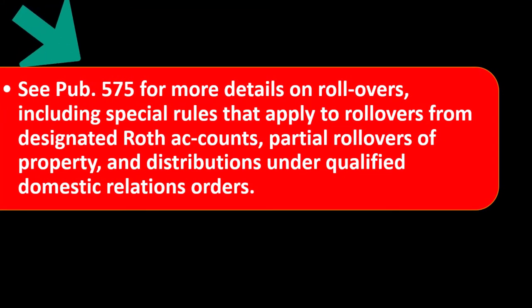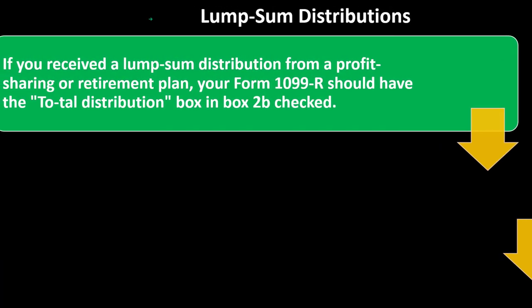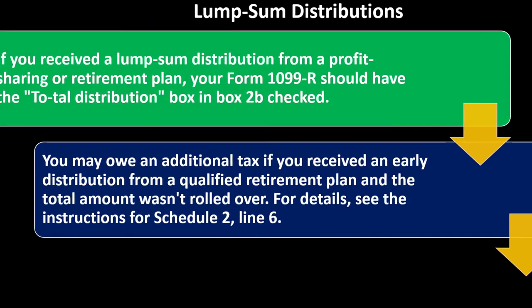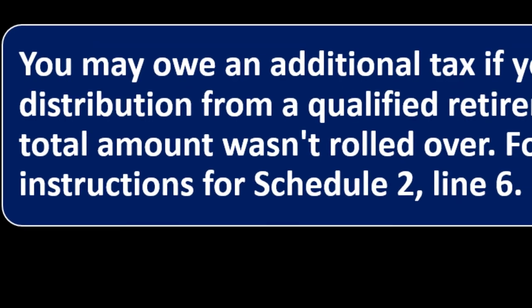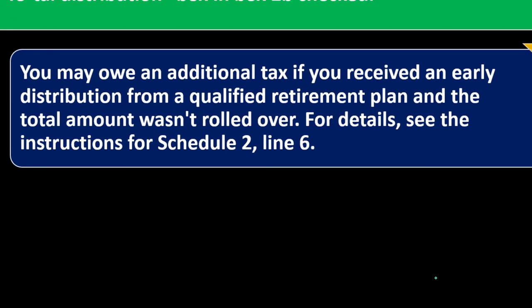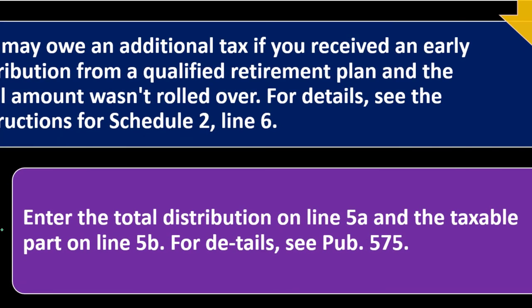See Publication 575 for more details on rollovers, including special rules for rollovers from designated Roth accounts, partial rollovers of property, and distributions under qualified domestic relations orders. For lump sum distributions from a profit-sharing or retirement plan, your Form 1099-R should have the total distribution box checked. You may owe an additional tax if you received an early distribution from a qualified retirement plan and the total amount wasn't rolled over — see the instructions for Schedule 2, Line 6. Enter the total distribution on Line 5A and the taxable part on Line 5B; see Publication 575 for details.